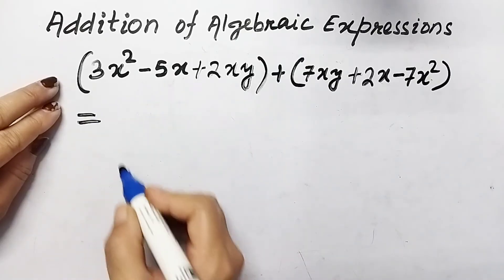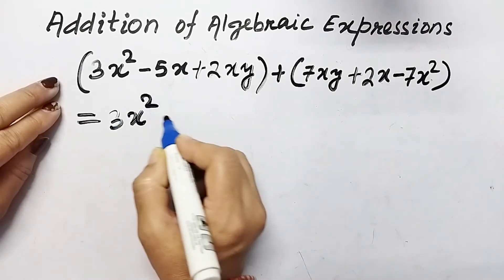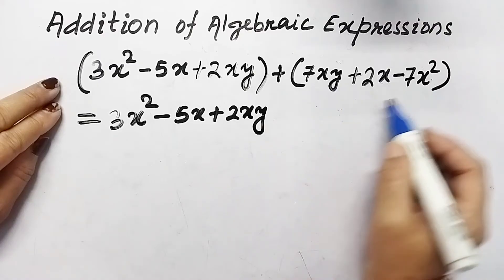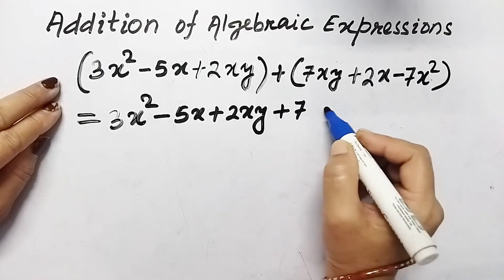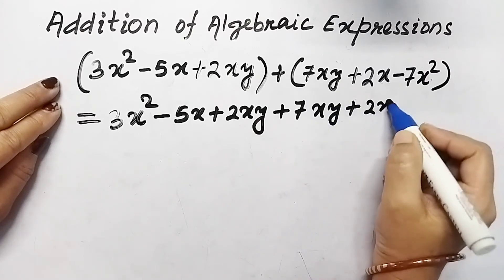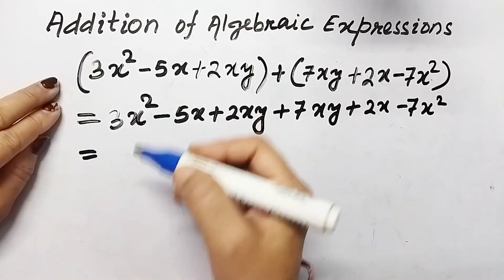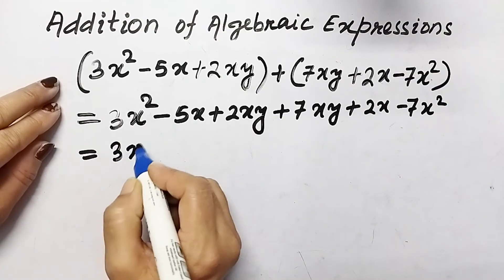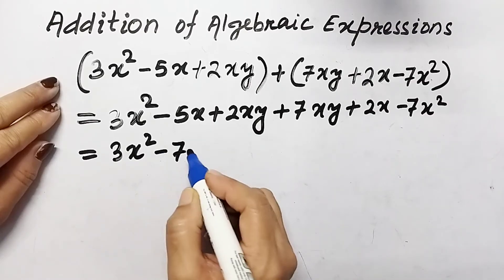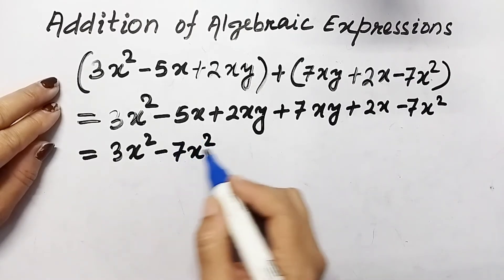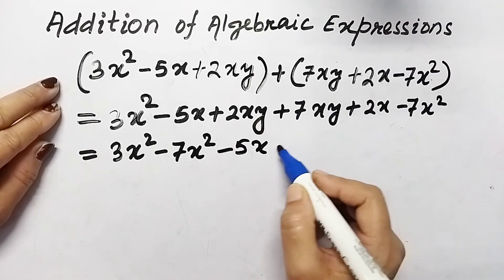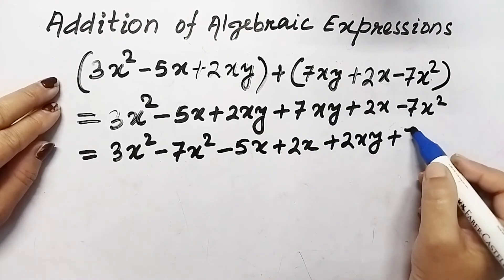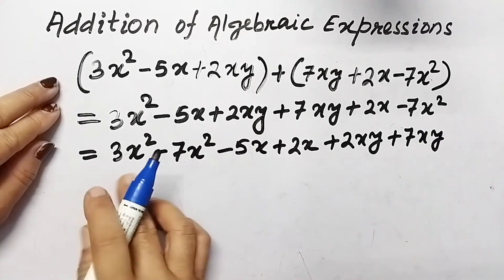In the horizontal method, first we write the first expression: 3x² minus 5x plus 2xy, then we add the next expression: 7xy plus 2x minus 7x². The next step is to group all like terms together. 3x² and negative 7x² are like terms, so we write them together. Then minus 5x and plus 2x, and then plus 2xy and plus 7xy. Now we have all like terms grouped together.